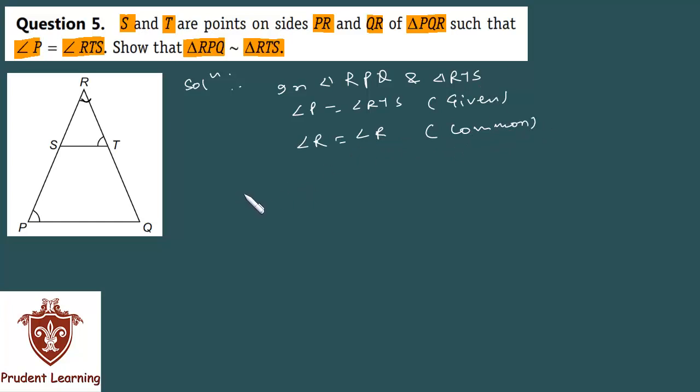By AA similarity criterion, both triangles are similar. How do we know that? Two angles of one triangle are equal to two angles of another triangle respectively.